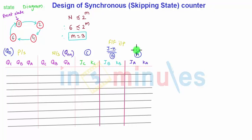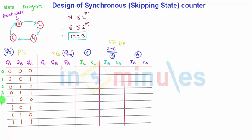Before going to the excitation table, we need to fill out the present state and next state columns. With 3 flip-flops there are 3 bits, giving 8 combinations from 000 all the way to 111, with decimal equivalents 0 through 7. From the state diagram, when the present state is 0, the next state is 2, so in front of 0 I place the code for 2, which is 010.